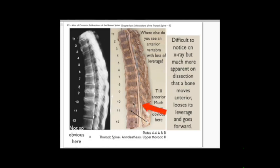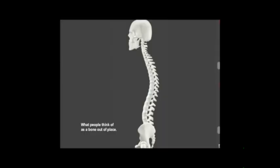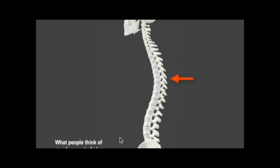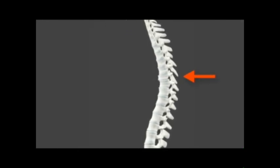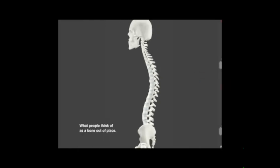What happens is, as you can see over here, the vertebra goes forward and loses its leverage. Let me show you a graphic of what happens when that vertebra goes forward. You have your lateral spine and what people think happens is, chiropractors think this bone goes forward. You can see that bone up there, they think something like that happens.